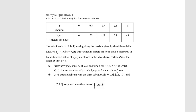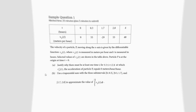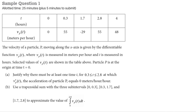Here's question one, part A: justify why there must be at least one time t in the interval 0.3 to 2.8 at which the derivative of velocity — also known as the acceleration of the particle — is equal to zero meters per hour squared. Part A is referring to Rolle's Theorem.